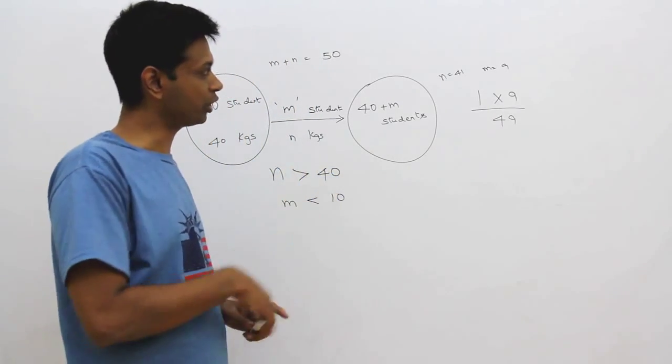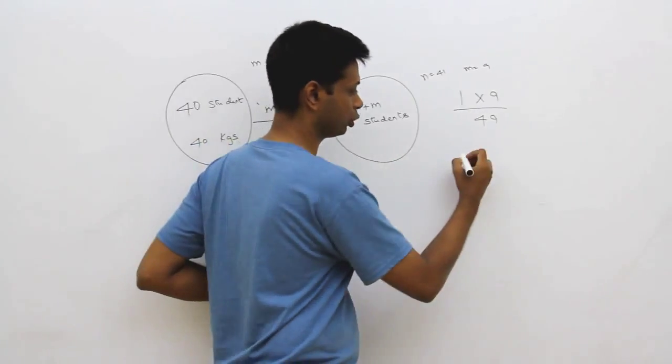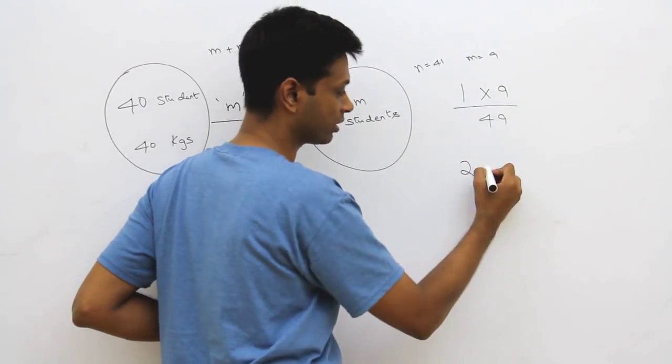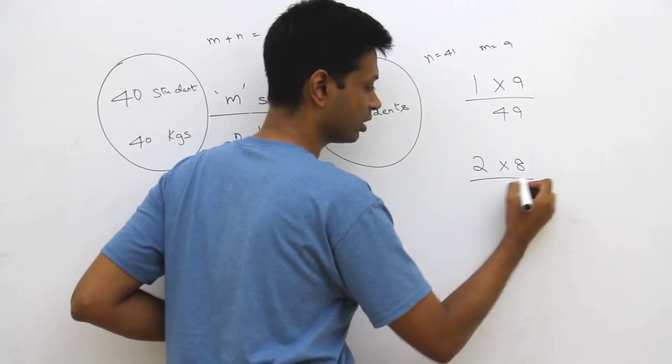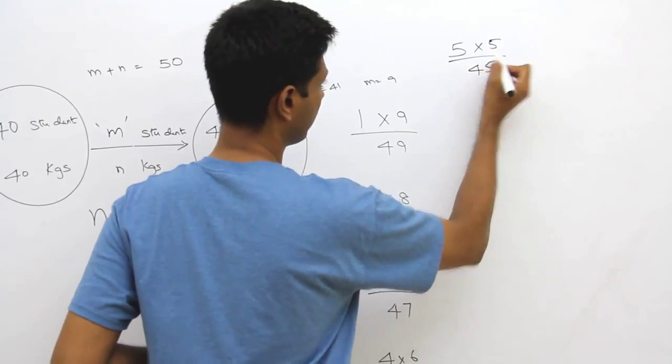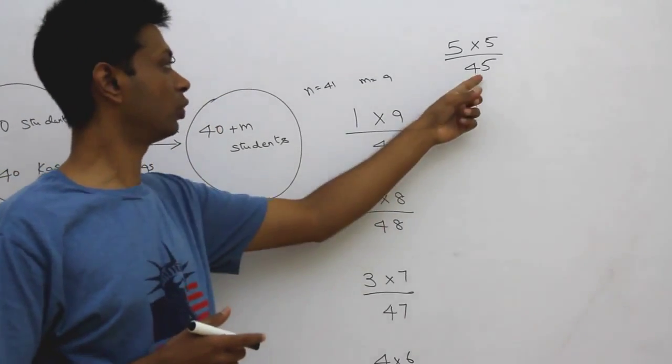Now, if we increase n to 42, m to 8. Then, extra weight per student is 2. Number of students bringing this extra weight is 8 students. Total impact on average is 2 into 8 by 48. 5 extra students, 5 kilograms extra each. 45 students total.